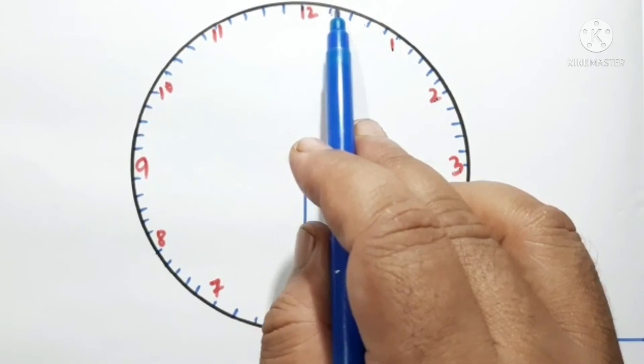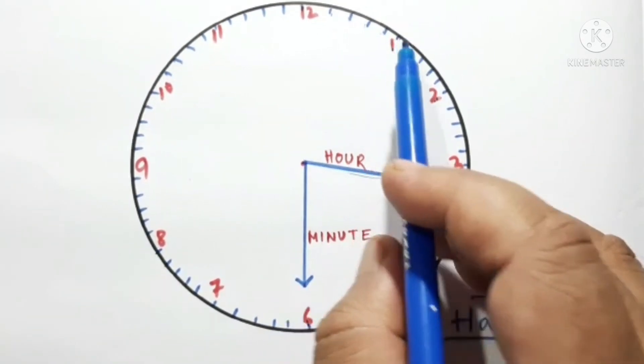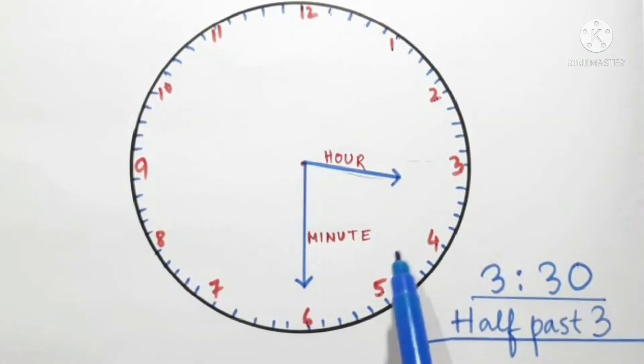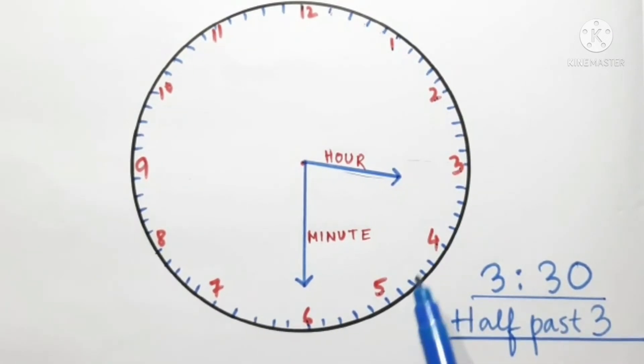This is 1 minute, 2, 3, 4, and 5. So this 1 represent 5 minutes. So 2 represent 10 minutes. This is 15 minutes, 20 minutes, 25 minutes, and 30 minutes.